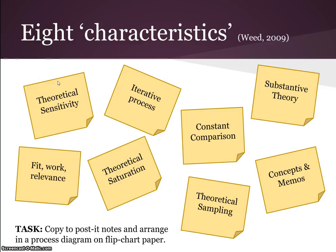Once you have developed theoretical sensitivity in an area, typically what people would do is go into a process of theoretical sampling. This is where you choose to sample a particular person or place based on them satisfying some theoretical criteria. Initially that might be a random sample, or you might go to somebody for a particular reason, but once the research begins, the sampling is guided by the emerging theory.